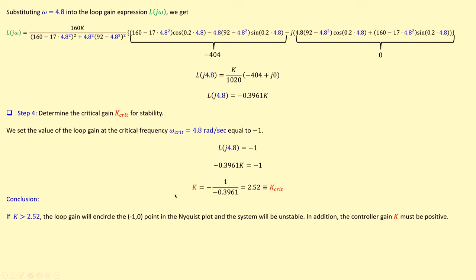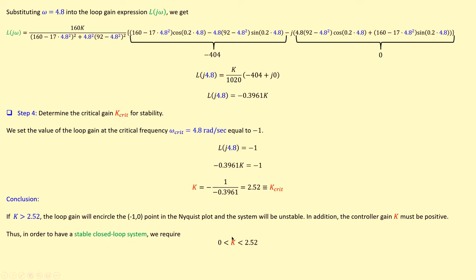To keep the system stable, the polar plot must not encircle the point (−1, 0). So we need K to stay below 2.52. Since K must also be positive, combining both conditions, we require 0 < K < 2.52 for a stable closed-loop system. That is the conclusion from our calculations.